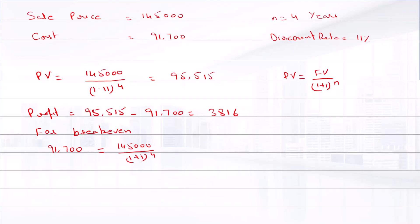We can rewrite this equation as interest rate equals ($145,000 divided by $91,700) raised to power 1/4, minus 1.